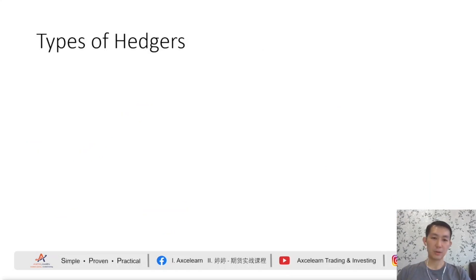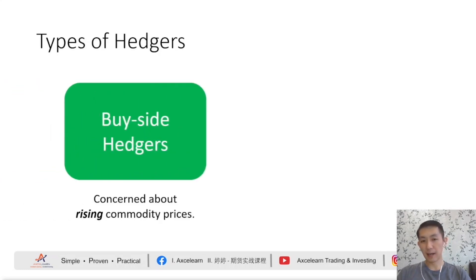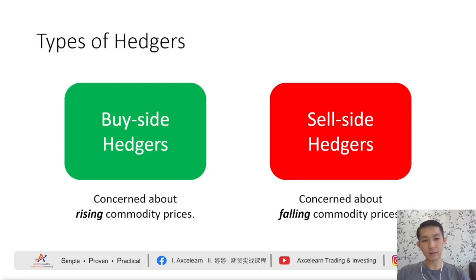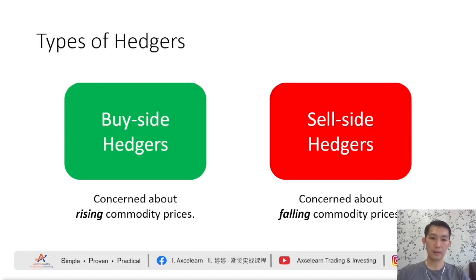There are several types of hedges in the crude palm oil commodities market. There are buy-side hedges — they are concerned about rising commodity prices, where they need to buy CPO from the market, so rising prices mean higher costs to them and they need to hedge against rising prices. Most of the time, buy-side hedges would be the palm oil refinery companies. On the other hand, there are sell-side hedges. They are concerned about falling commodity prices — when they need to sell crude palm oil in the market, lower prices mean lower sales to them, so they need to hedge against the falling price of CPO. The sell-side hedges would be those crude palm oil millers and producers.